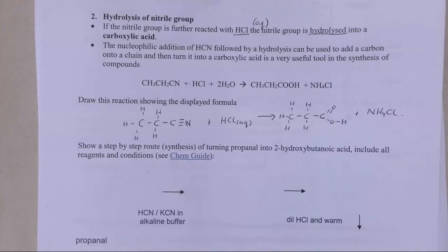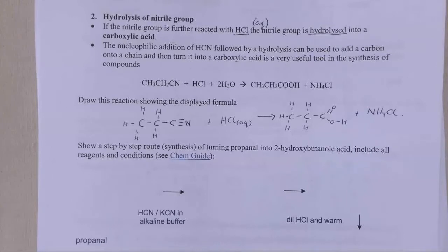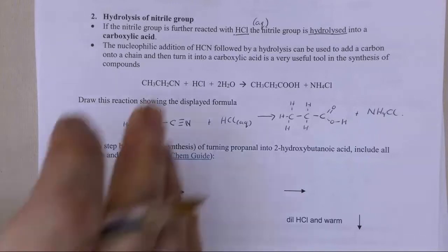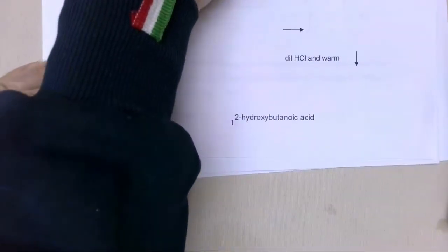We need to be able to do syntheses in chemistry. You're expected to be able to do up to a four-step synthesis with no help - to turn one chemical into a different chemical. We're going to start you off quite slowly, and we're just going to do a two-step reaction. So I'd like you to pause the video now and have a go at turning propanol into 2-hydroxybutanoic acid. Hopefully you've paused the video for long enough and had a go at that reaction - I'm going to go through it with you now.